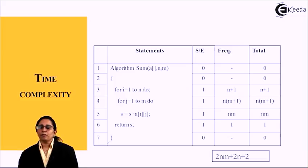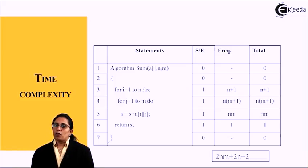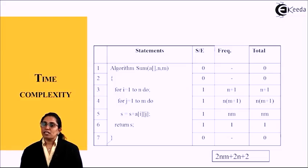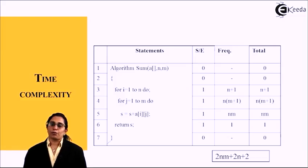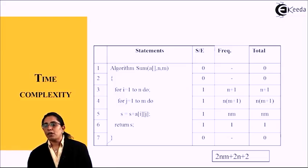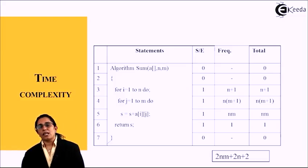For the second example, a small algorithm is given that calculates the sum of the array. The first one is a function definition, so the execution frequency and total time complexity is 0. The second one is opening brace, so the step count, frequency, and total time complexity is 0.